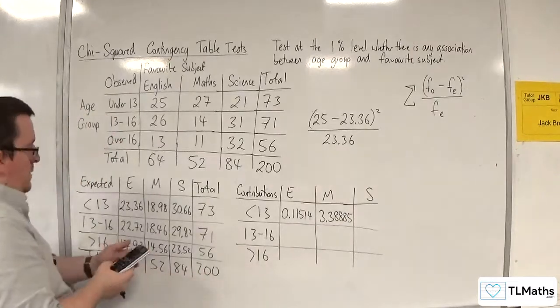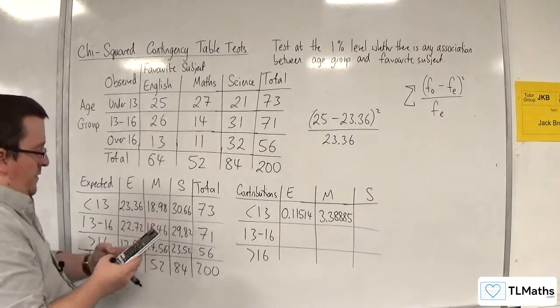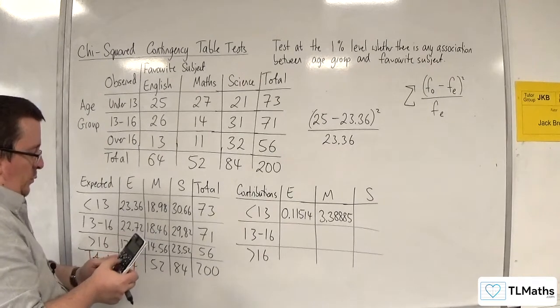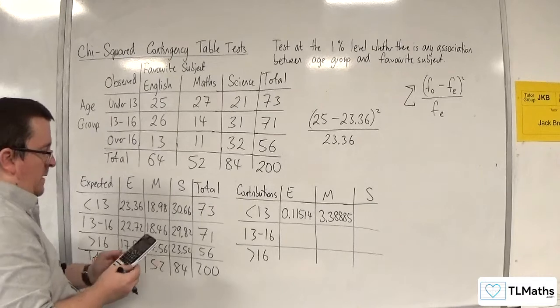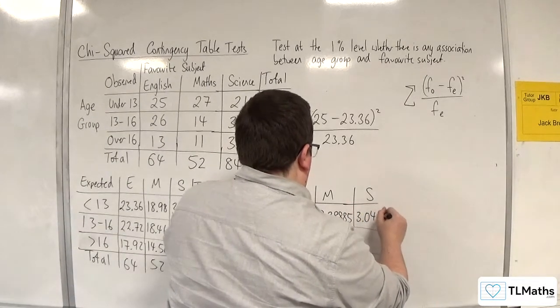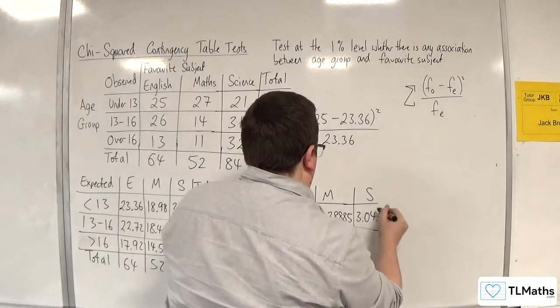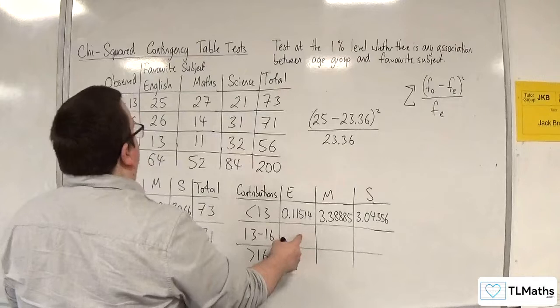This one next. So we have 21 take away 30.66, all squared, divided by 30.66. And we get 3.04356.